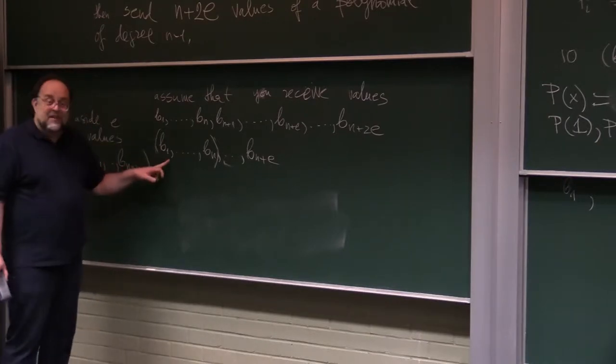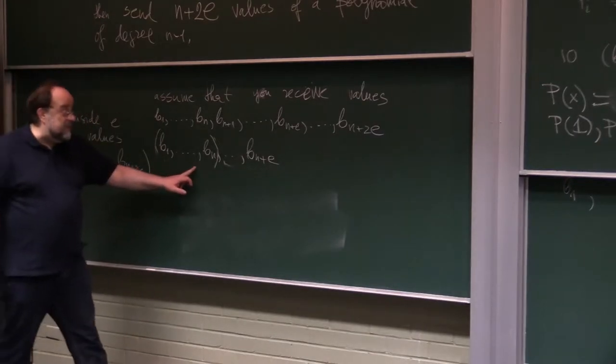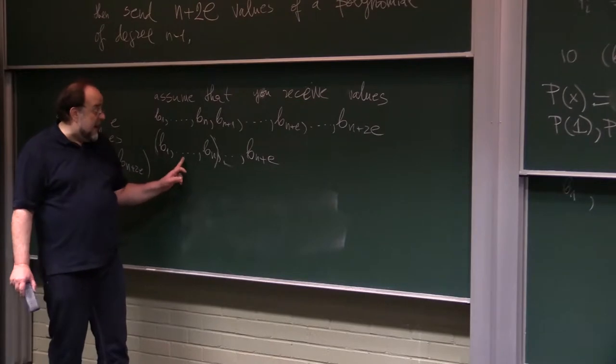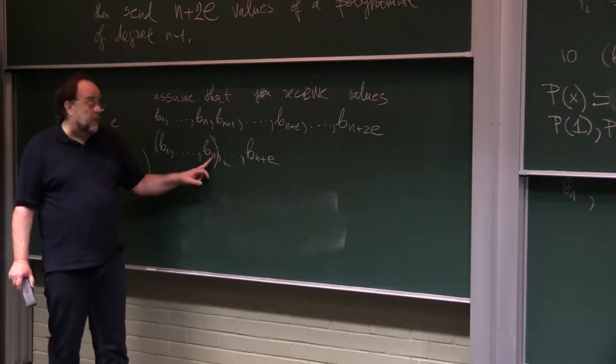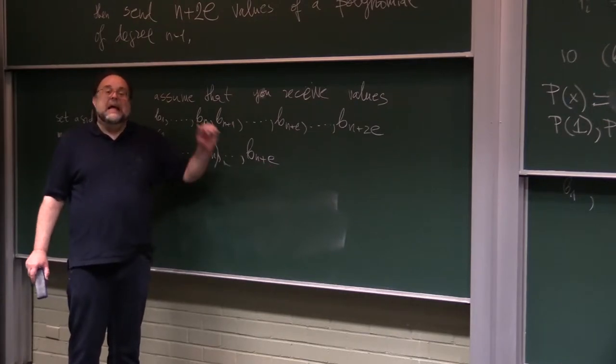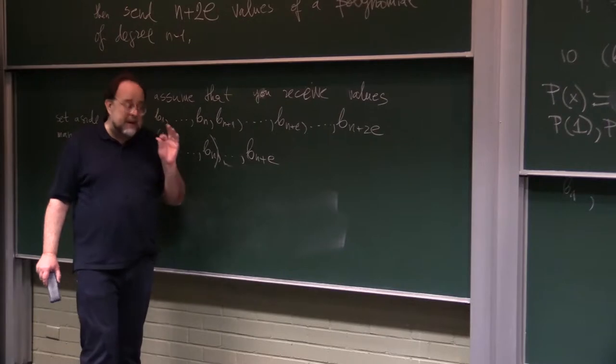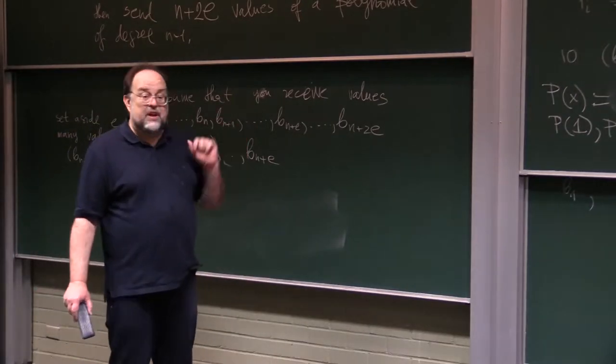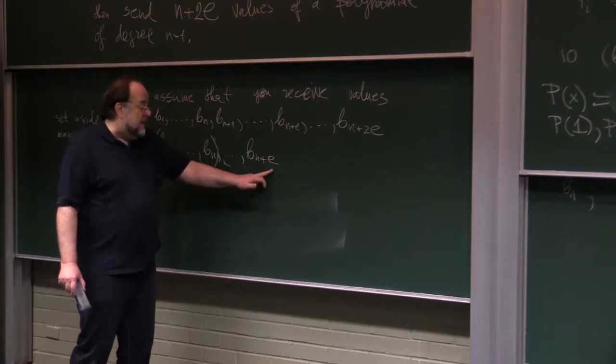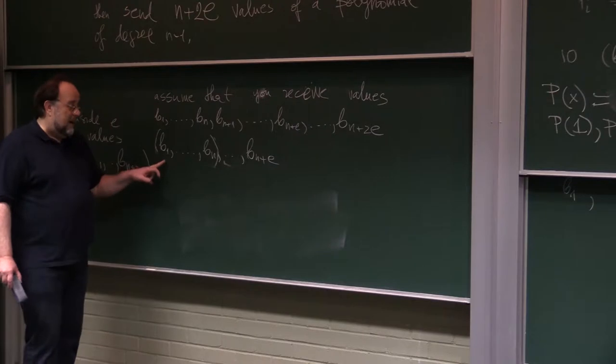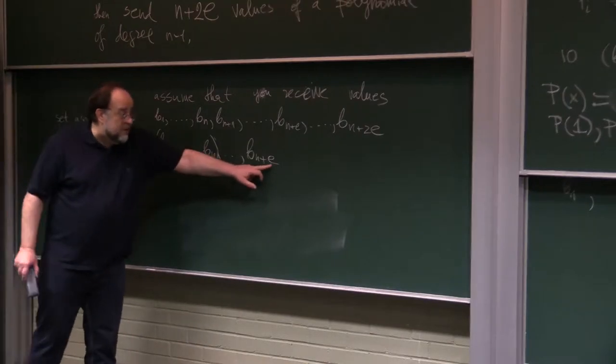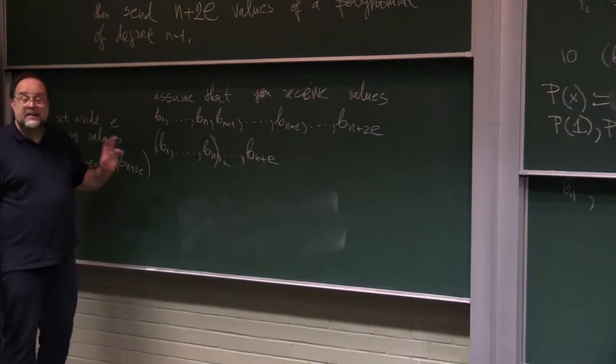And notice, once you find the fit, you will have redundant information because you will have n values of your polynomial plus e many also correct values. And this is the key ingredient of Berlekamp-Welch algorithm for fast decoding. The fact that you actually do have redundant information once you isolate the errors.